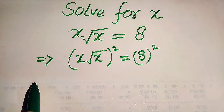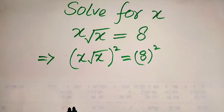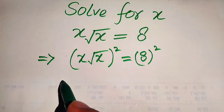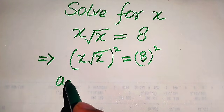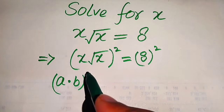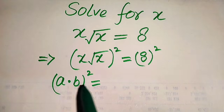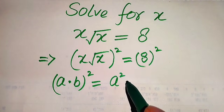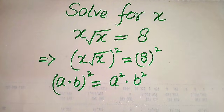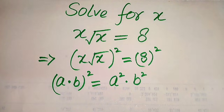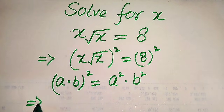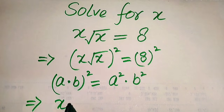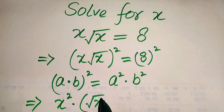Here we need to use the algebraic formula: if we have (a × b) whole squared, we apply the square separately on both values, and it will be written as a² × b². So here we need to apply this square separately on both values, and it will be written as x² multiplied by (√x) whole squared.